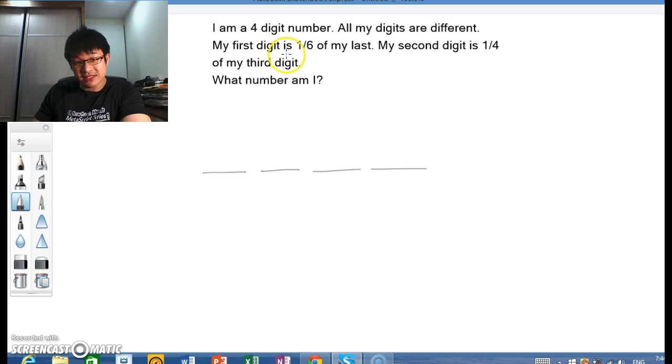My first digit is one-sixth of my last. So my first digit will be one unit, whereas the last digit will be six units. We can simply put it down as 1 and 6.